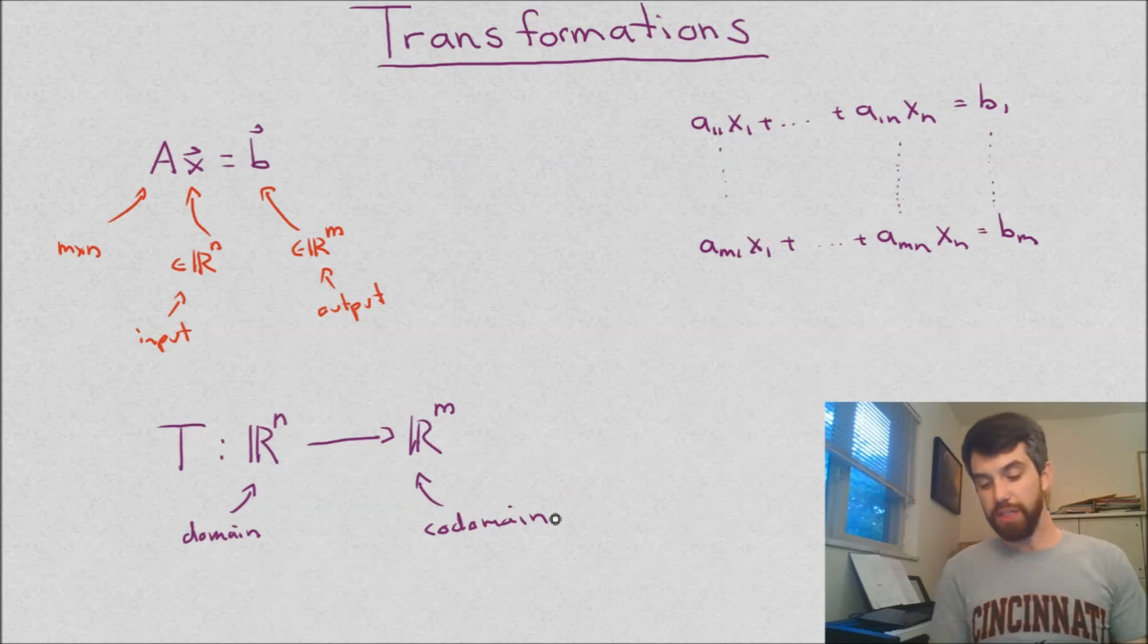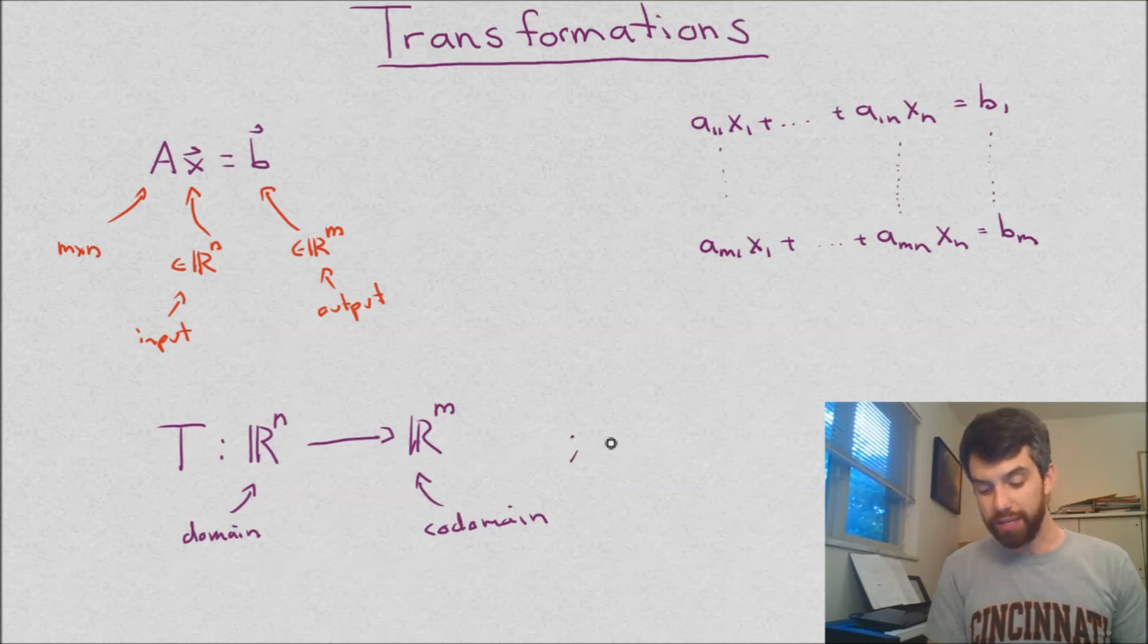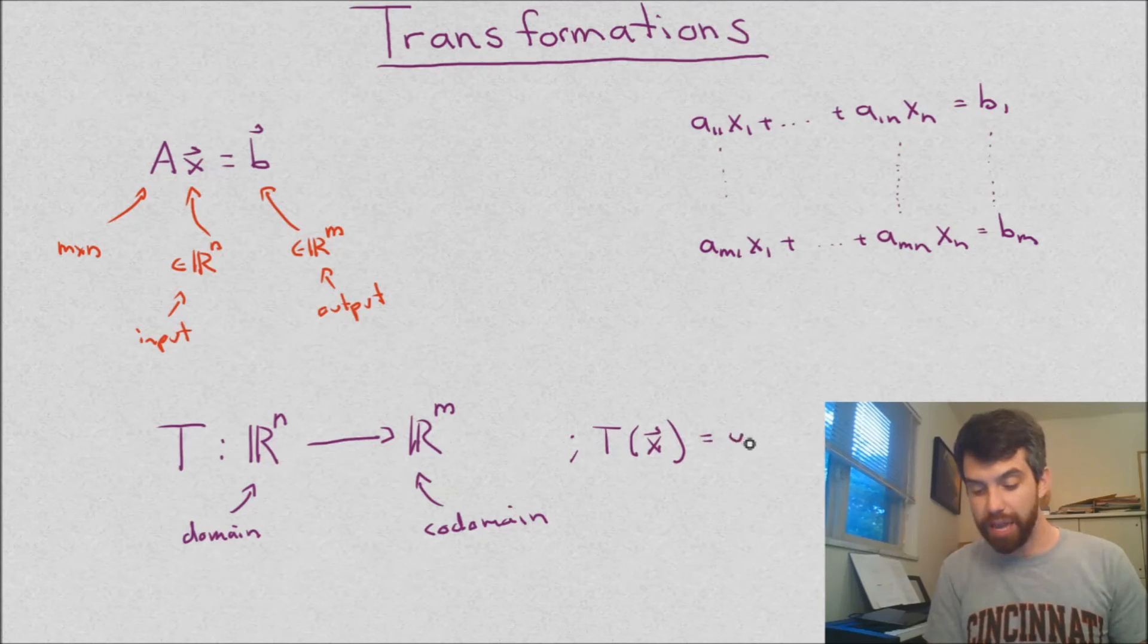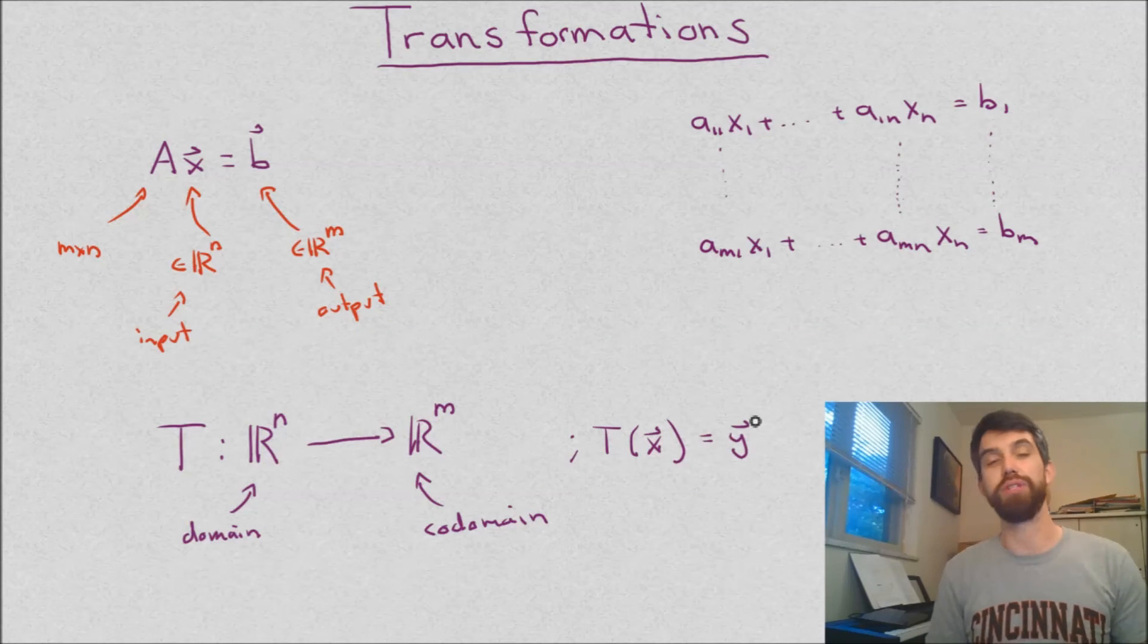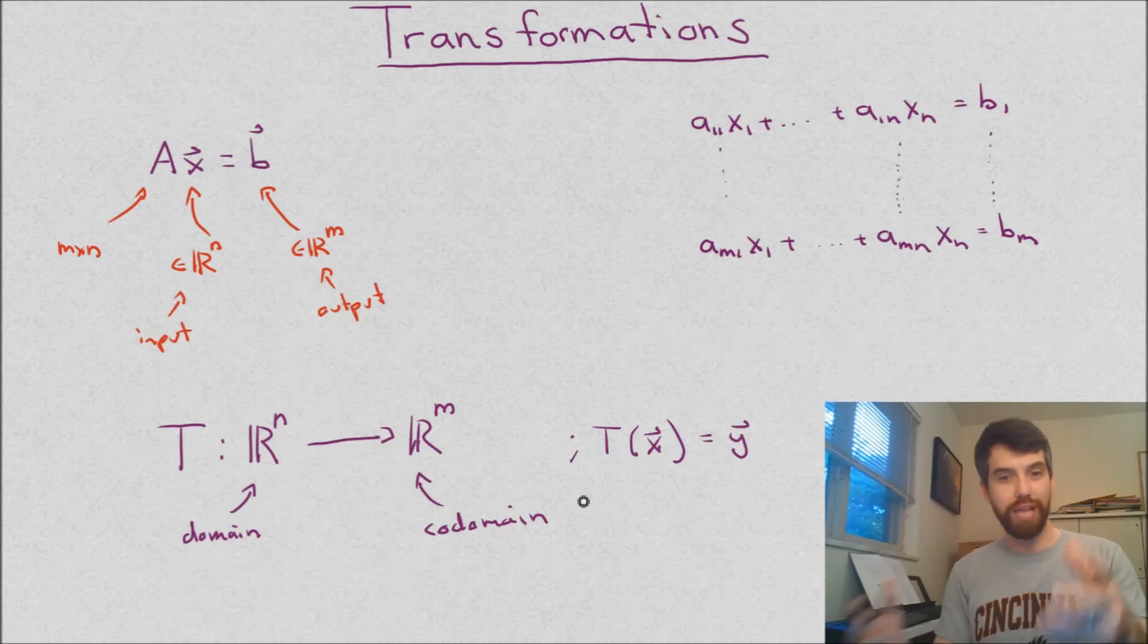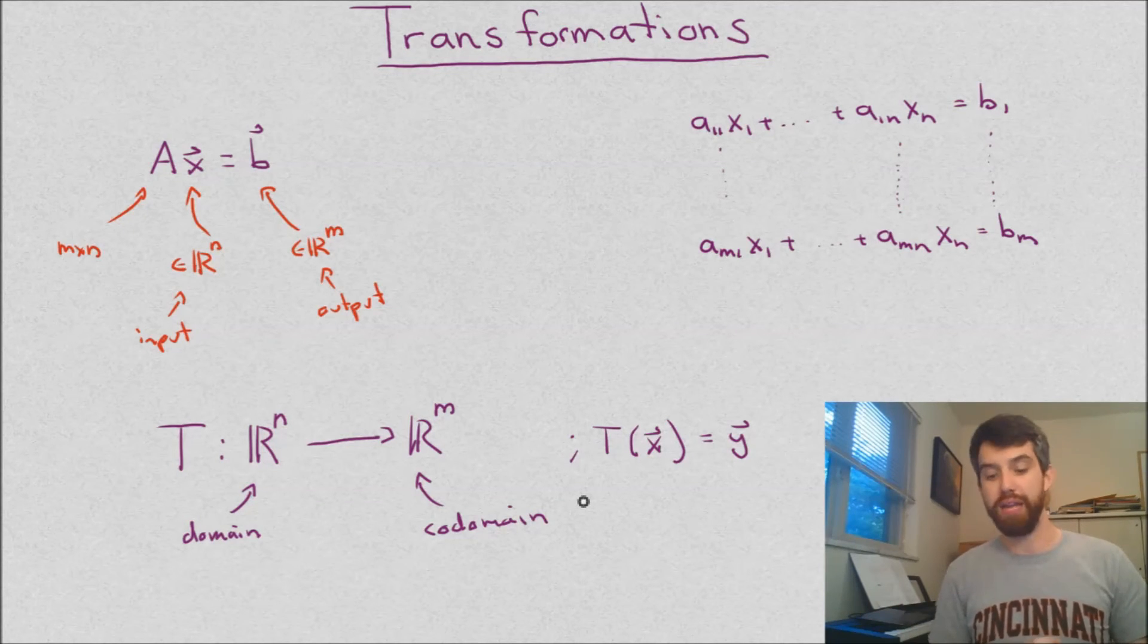And the other way that we'll sometimes write this is that we'll say that the transformation takes a vector x living inside of R^n and spits out a vector y, which is living inside of R^m. And this sort of matches our y equals f of x notation we might have had in calculus.